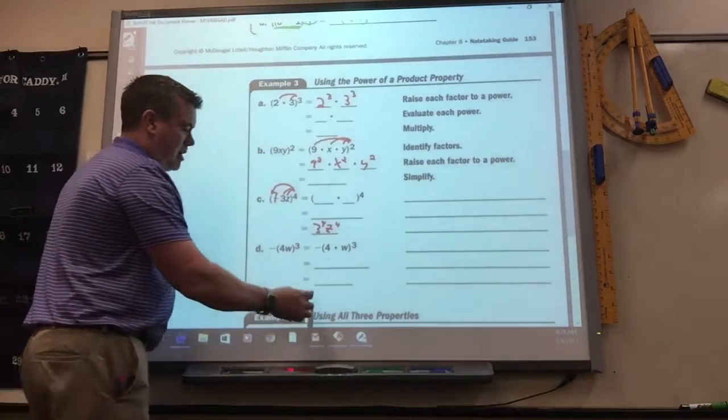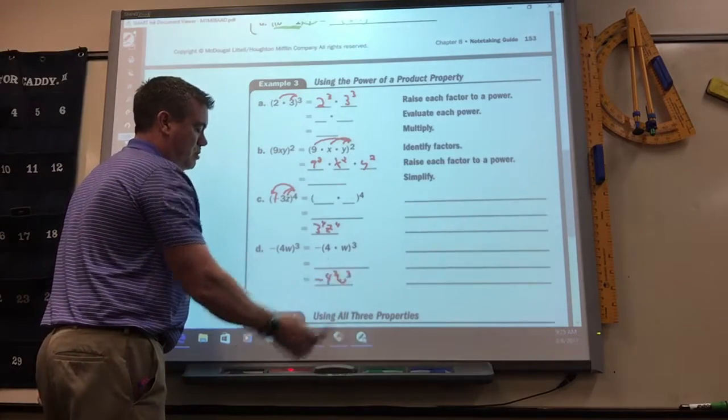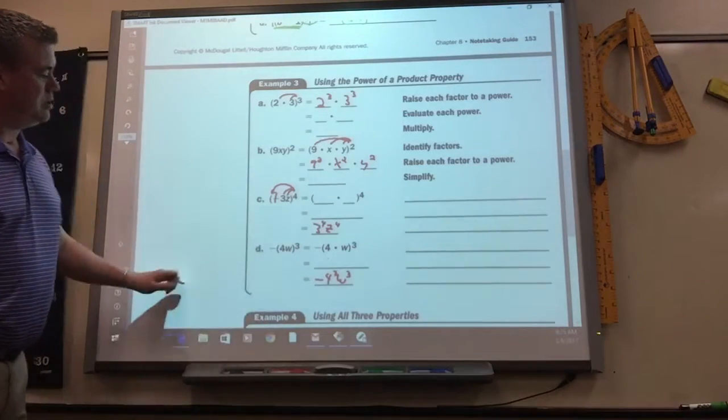This one, the negative is out front. So it would be negative 4 cubed, w cubed. Just, it's not being included there.